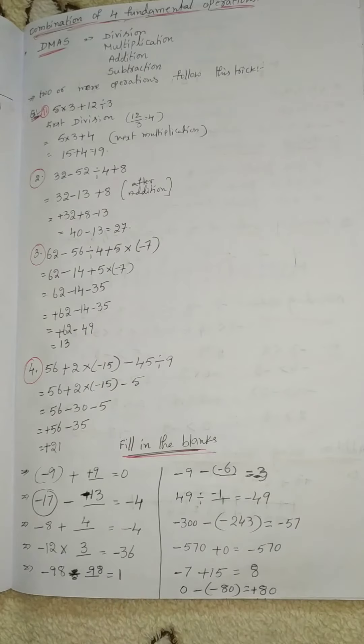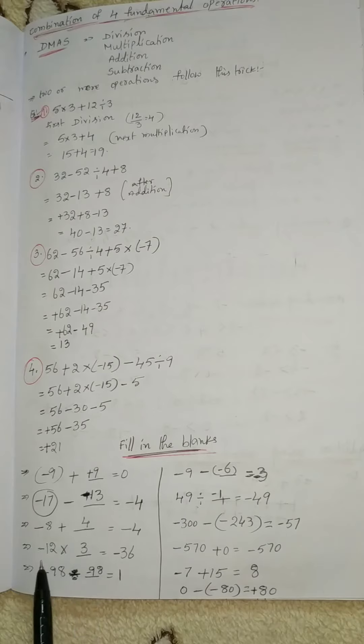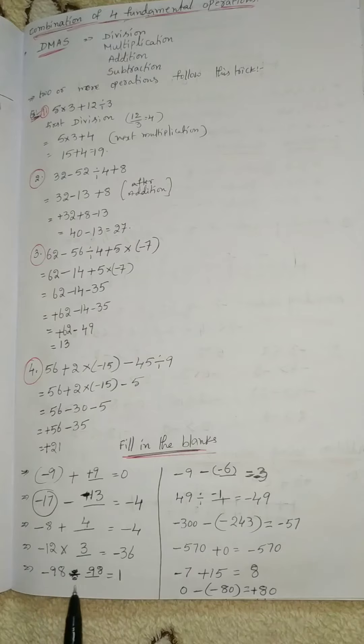We will get -4. -12 times what equals -36? 12 times 3 is 36, so the answer is 3. 98 divided by what equals 1? 98 divided by 98, and minus minus cancel, so -98.